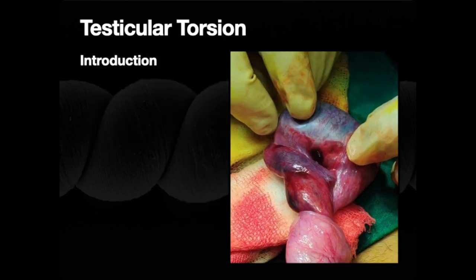Testicular torsion, big picture, is a twisting of the testicle and spermatic cord within the scrotum leading to acute testicular pain, ischemia, and vascular compromise. We don't have enough blood flow because we've pinched off the supply — that causes ischemia and, if not reperfused, loss of function and testicular infarction. It can happen in two peaks: generally in infancy and then adolescence, though we've seen it outside those typical bimodal peaks.